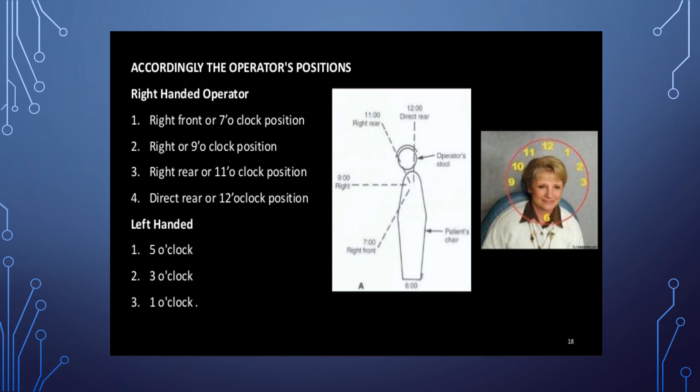According to operator positions, a right-handed operator should observe the following: if working at the right front it should be in the 7 o'clock position; if at the right it should be in the 9 o'clock position; if at the right rear it should be in the 11 o'clock position; and if at the direct rear it should be in the 12 o'clock position. If the dentist is left-handed it should be at the 5 o'clock, 3 o'clock and 1 o'clock positions.